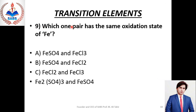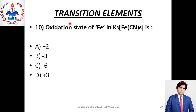Next question No. 9: Which one has the same oxidation state of Fe? یہاں پر +2 ہے اور ادھر بھی +2 ہے۔ Right option is Beta. Next question No. 10: Oxidation state of Fe in K3[Fe(CN)6] — potassium hexacyanoferrate(3) — یہاں پر iron کی oxidation state +3 ہے۔ Right option is Delta.